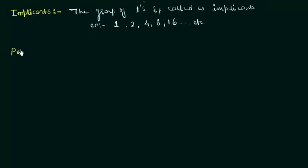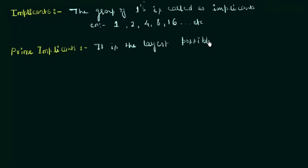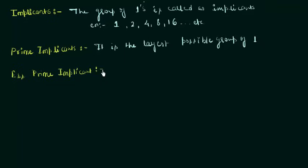Now the next thing is your prime implicant. So what is the prime implicant? It is actually the largest possible group of ones. We will see one example in which we will find out the prime implicants and also the essential prime implicants. It is the group of ones and it is also the largest because it is a prime implicant.